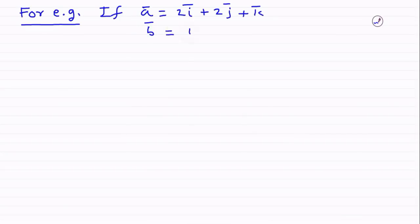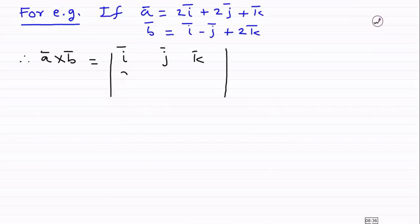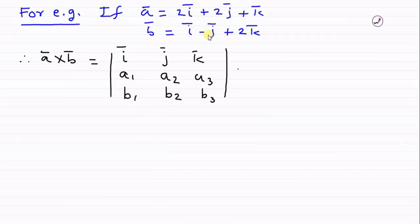Suppose we want to find the cross product of two specific vectors. Then a-bar × b-bar equals the determinant of i, j, k in the first row. Here a1 = 2, a2 = 2, a3 = 1; and b1 = 1, b2 = −1, b3 = 2. We substitute these values into the determinant, giving rows: [i, j, k], [2, 2, 1], [1, −1, 2].